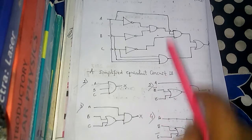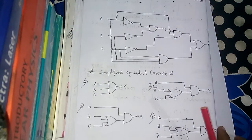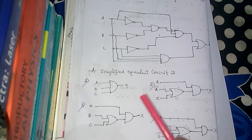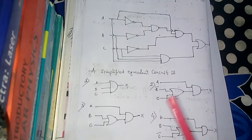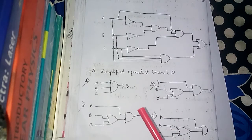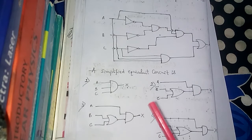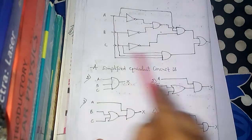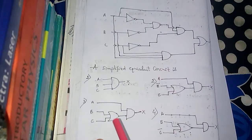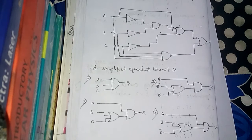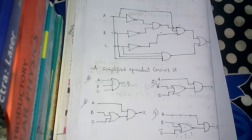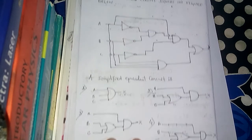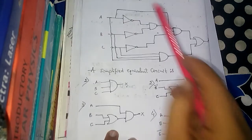It asks which of the four circuits is equivalent to the given circuit — which one works exactly the same and has the same output. In digital electronics, you can have two circuits with a different number of gates yet still have the same output. So we have to find the equivalent circuit to this given circuit.